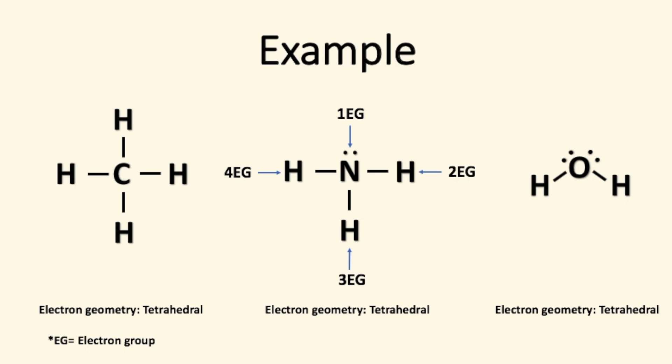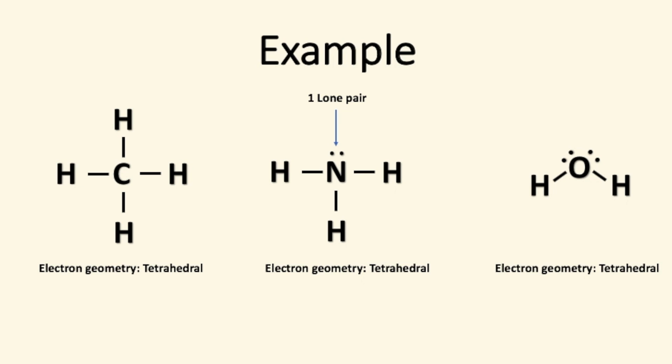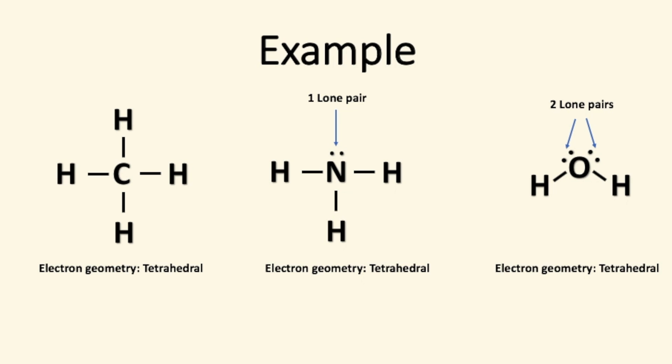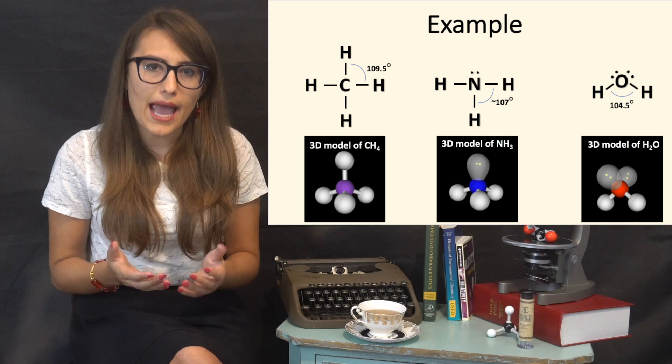The major difference is that in NH3 we have a lone pair instead of a fourth hydrogen. In H2O we have two lone pairs. However, when we look at the bond angles around the central atom, CH4 is about 109.5 degrees while NH3 is about 107 degrees and H2O is about 104.5 degrees. So we know that the lone pairs are decreasing the bond angles and pushing the other hydrogens closer together. But why does this happen?